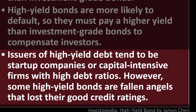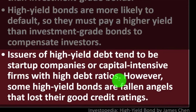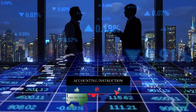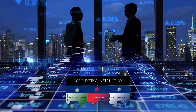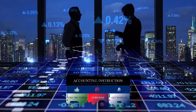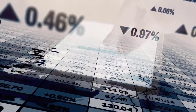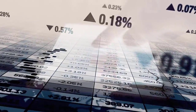Issuers of high yield debt tend to be startup companies or capital-intensive firms with high debt ratios. Startup companies often go through a substantial growth phase — buying factories, equipment, and so on — which will hopefully generate revenue in the future. That's when they need more capital, and that's when they might issue bonds to finance those operations.